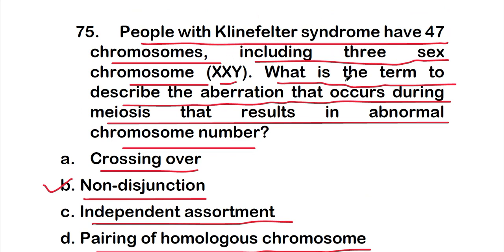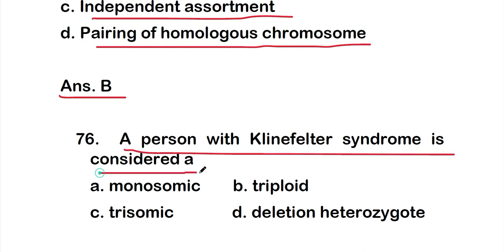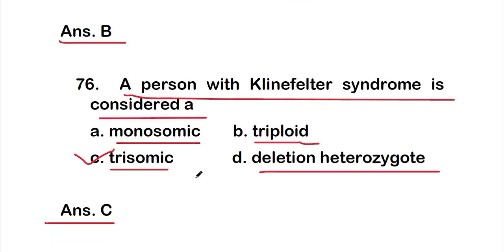Question 76: a person with Klinefelter syndrome is considered — Option A: monosomic, Option B: triploid, Option C: trisomic, Option D: deletion heterozygote. The right answer is Option C — trisomic. A person with Klinefelter syndrome is considered trisomic.